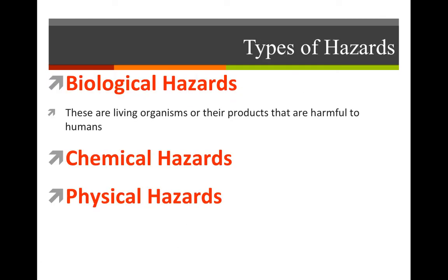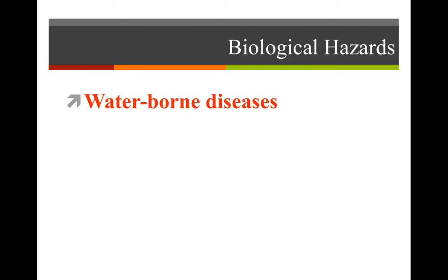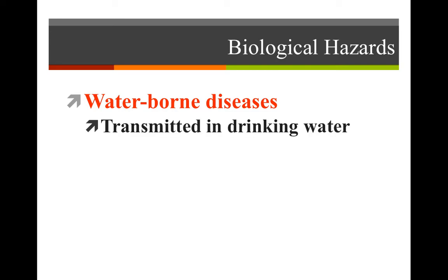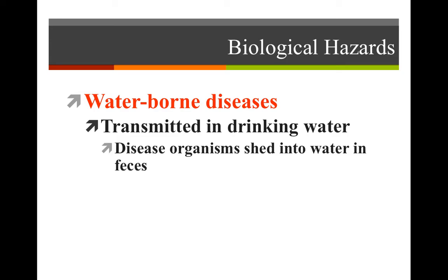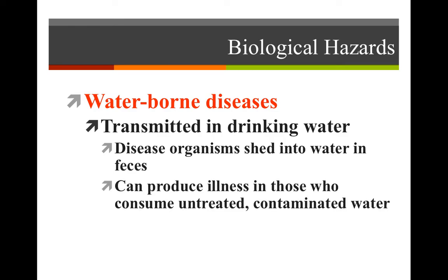We're going to look at the different types of hazards — starting first with biological hazards, then chemical, then physical. With biological hazards, we'll start with waterborne diseases. Most waterborne diseases are found in developing countries and impoverished areas, and they're usually transmitted through drinking water. Disease organisms are shed into the water through feces of animals or humans and can produce illness in those who consume that untreated or contaminated water.